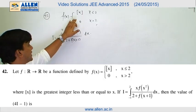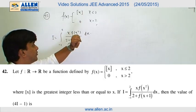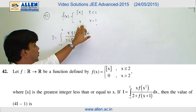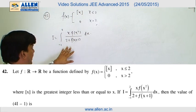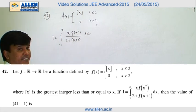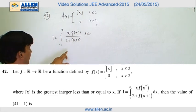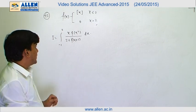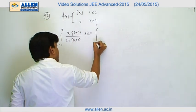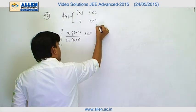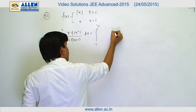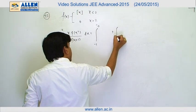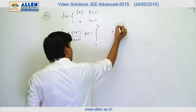Here we have f(x) = x for x ≤ 2 and 0 for x greater than 2, and we have to evaluate this integral. So we will break the integral from −1 to 2 as: from −1 to 0, then 0 to 1, and continuing further sub-intervals.